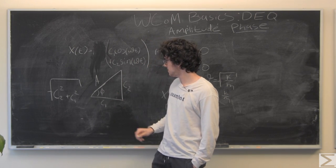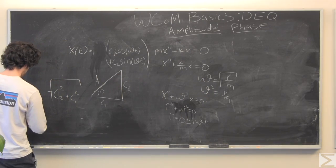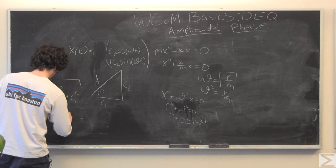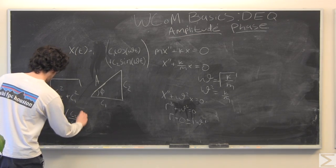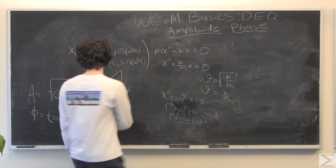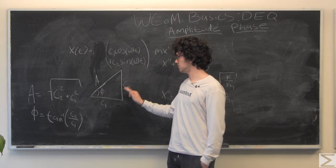Our phase, phi, is just c2 over c1. It's the tan inverse of c2 over c1.